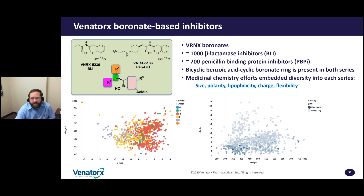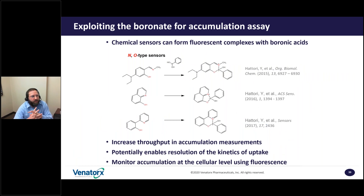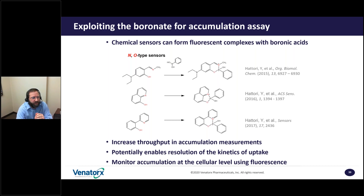The Venatorix team realized that chemical sensors had been described that become fluorescent upon forming a complex with boronic acids. These chemical sensors can bind boronic acids and form a new fluorophore — there's no fluorescence without the boronic acid. The boronic acid binds and then we get fluorescence. As Jessica pointed out, there are several advantages to fluorescence assays. The question is how best to take advantage of fluorescent boronate sensors in the context of an accumulation assay.